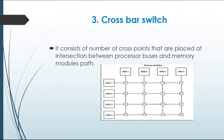What happens in crossbar switch? It consists of a number of cross points that are placed at the intersection between processor buses and memory module paths. In crossbar switch, this is a switch for the interconnection between CPU and memory module. The entire system must be coupled with the memory module.